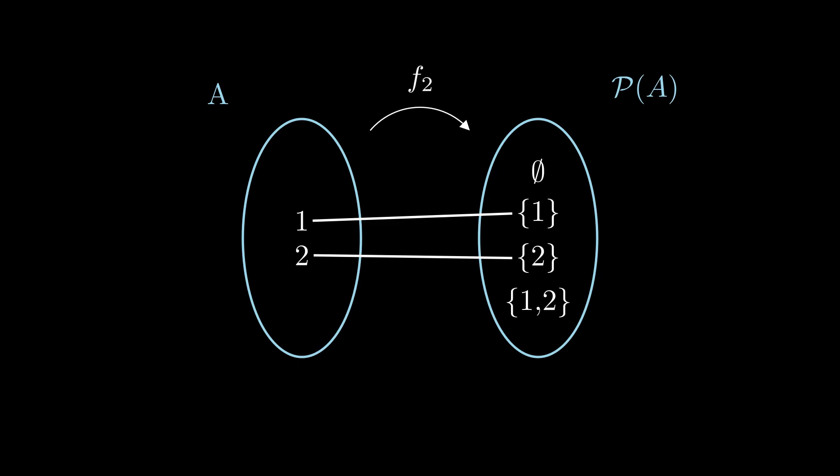We could also choose an F2 that does the exact opposite of what F1 does. I mean, for the number 1, let's assign it a subset of A that does not contain it. Same for 2. Similarly, to our former example, F2 isn't surjective either.